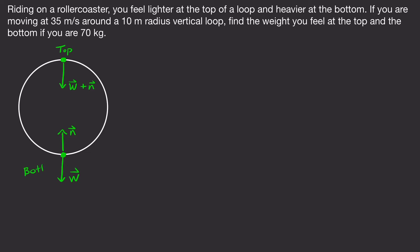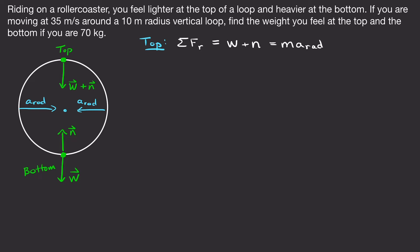The only difference between top and bottom is the direction of the normal force. At all points, acceleration is radial — toward the center. At the top, summing forces in the radial direction: weight plus normal force (both pointing inward/downward) equals mass times radial acceleration. They are both positive because they are in the same direction as the centripetal acceleration.